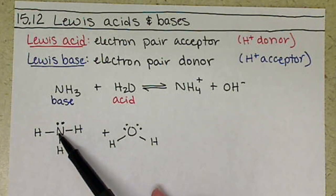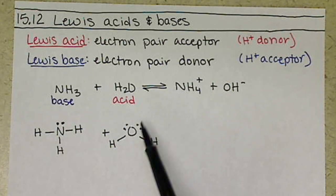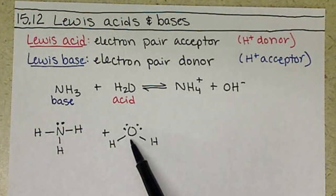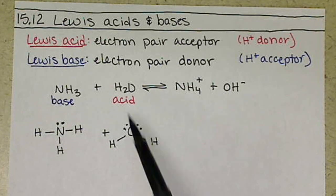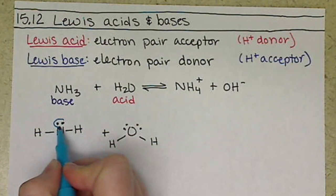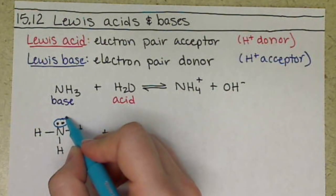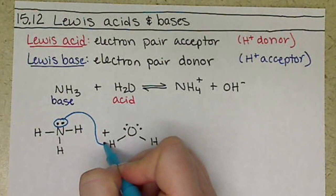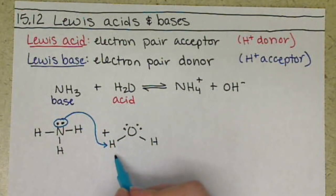So NH3 wants to be our base, so it needs to donate a pair. Water is our acid, so it needs to accept a pair. So what happens is this lone pair on the nitrogen is going to be donated to one of the hydrogens on water.